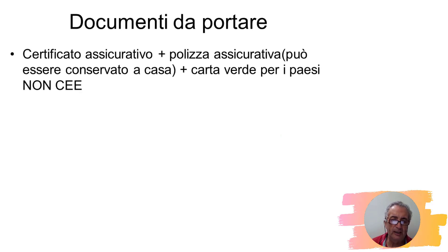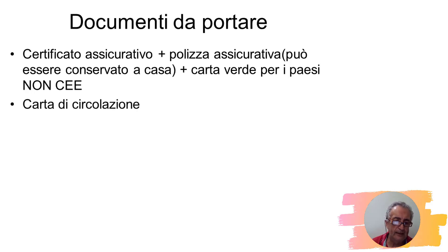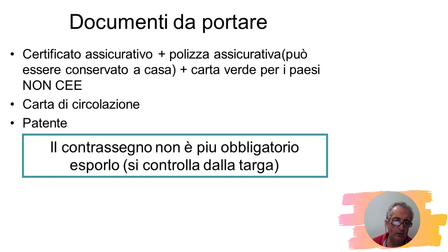Documenti da portare durante la guida: il certificato assicurativo, la carta verde per i paesi non appartenenti alla Comunità Europea, la carta di circolazione e la patente. La polizza, cioè il contratto, si può conservare a casa. Il contrassegno non è più obbligatorio esporlo perché ora il controllo avviene in forma elettronica e informatica attraverso la targa.